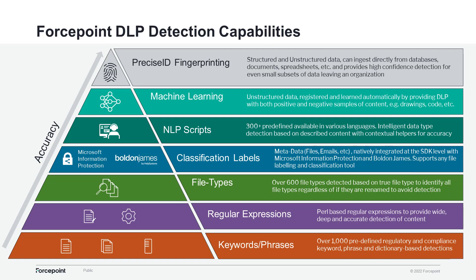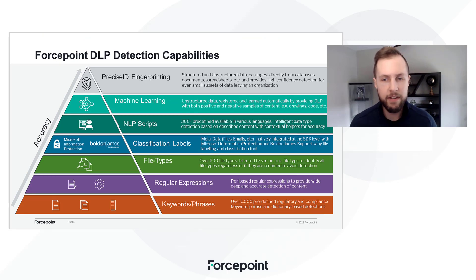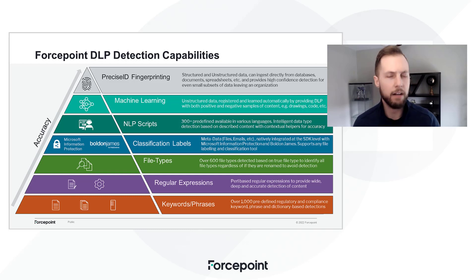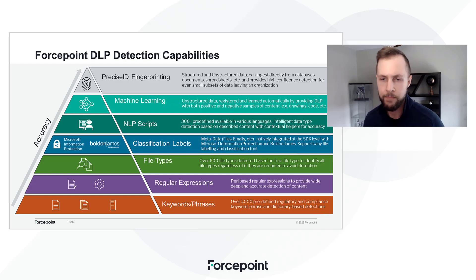Starting at the bottom and working our way up, we have the typical capabilities that all DLP vendors have, which is keywords, phrases, and regular expressions. Just out of the box, we have over 1,500 classifiers, and this is really going to help you get started to identify intellectual property needs, compliance needs — PII, PCI, PHI — you name it.